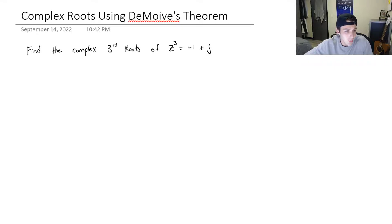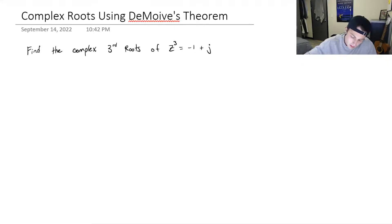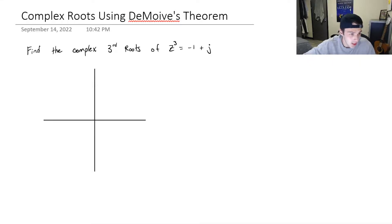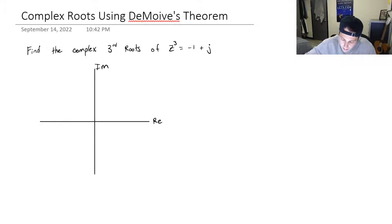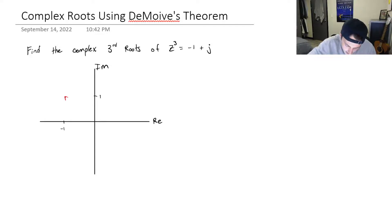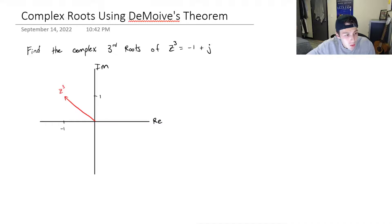The first thing we're going to do is convert this into polar form, and I personally like to visualize it as well. So first I'm going to draw this out — real axes and imaginary axes. We have negative 1 on the real axis and positive 1 on the imaginary axis. This is z cubed. Notice how the units in the real and imaginary are equal.